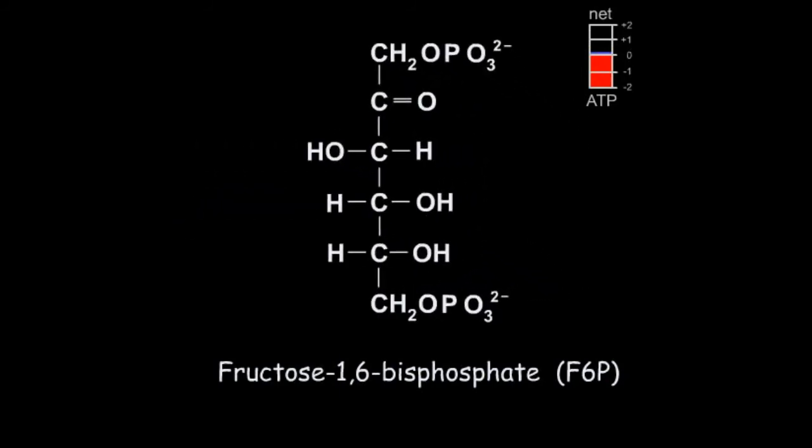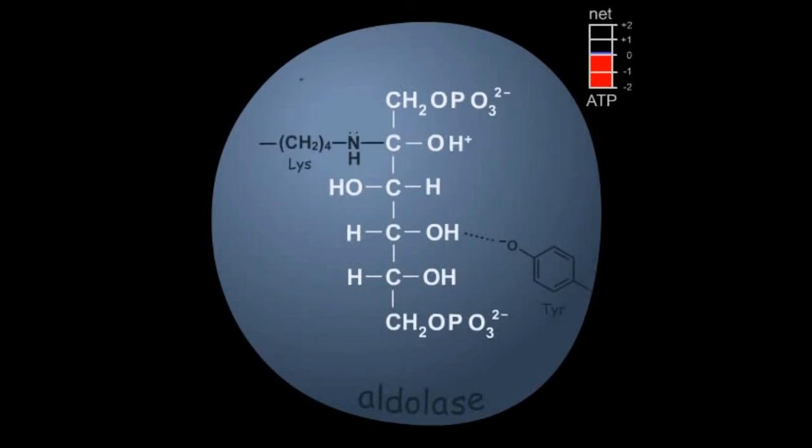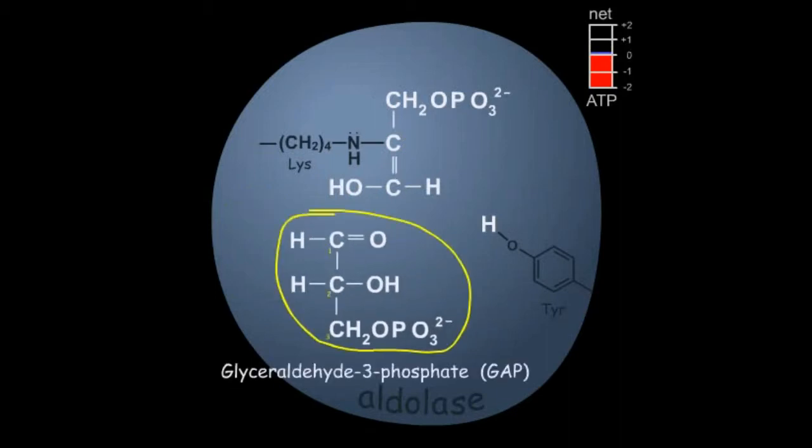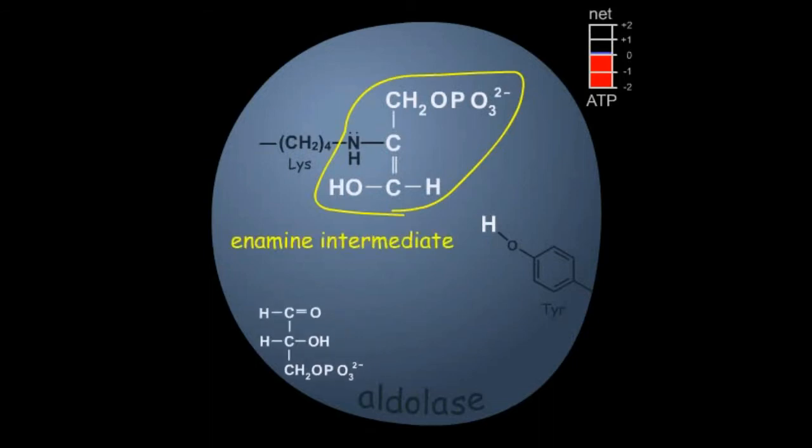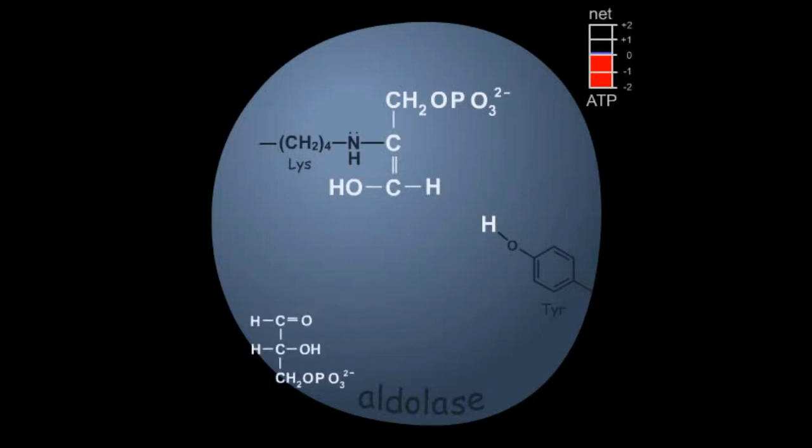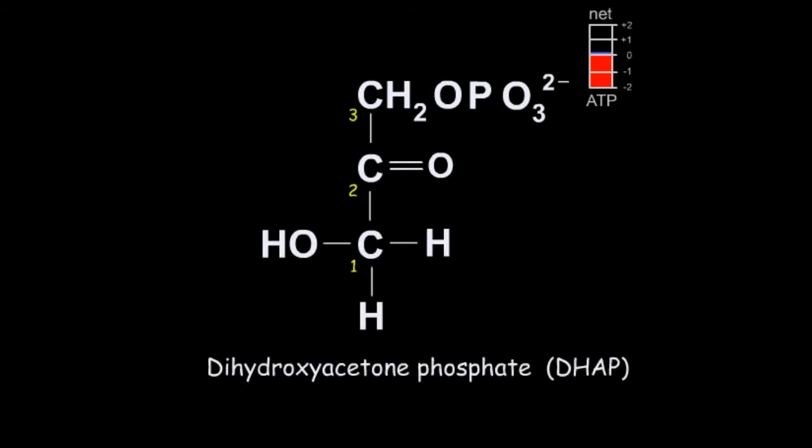In the next reaction, the enzyme aldolase cleaves the six-carbon monosaccharide fructose-1,6-bisphosphate into two three-carbon molecules: glyceraldehyde-3-phosphate and dihydroxyacetone phosphate. Lysine and tyrosine from the enzyme base participate in the proton transfer in the breakdown pathway. A tyrosine side chain in its phenolate anion form extracts a proton from the 4-hydroxyl group of the substrate. This initiates an aldol cleavage reaction between the substrate's number three and number four carbons to yield one molecule of glyceraldehyde-3-phosphate and an enamine intermediate. The enamine is protonated by the tyrosine side chain, and the resulting imine is hydrolyzed to yield dihydroxyacetone phosphate.